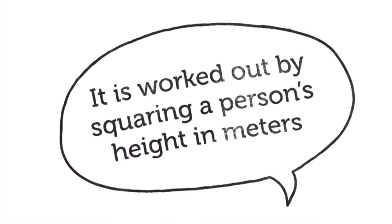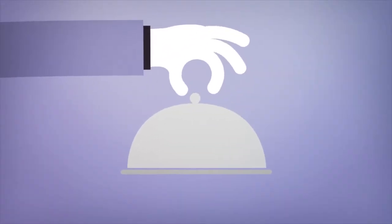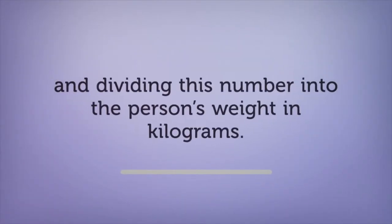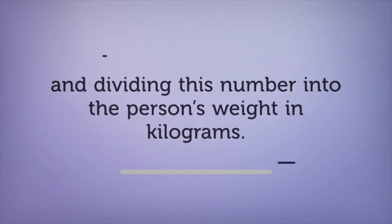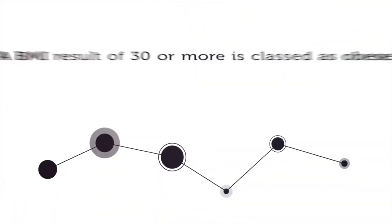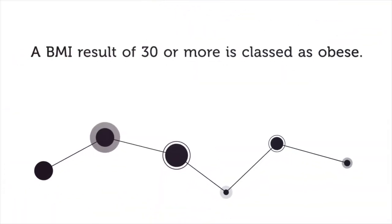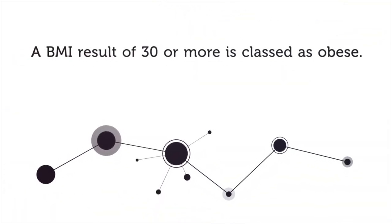It's worked out by squaring a person's height in meters and dividing this number into the person's weight in kilograms. A BMI result of 30 or more is classed as obese.